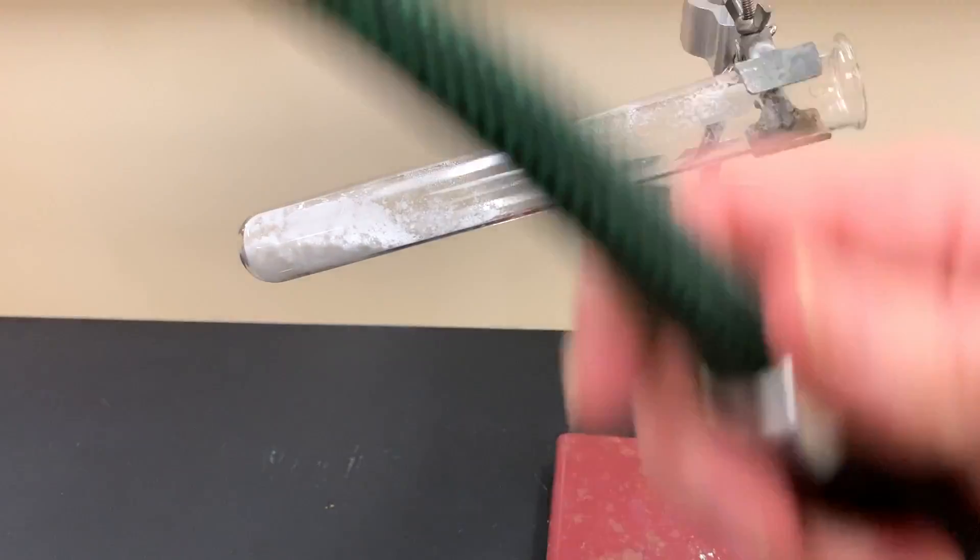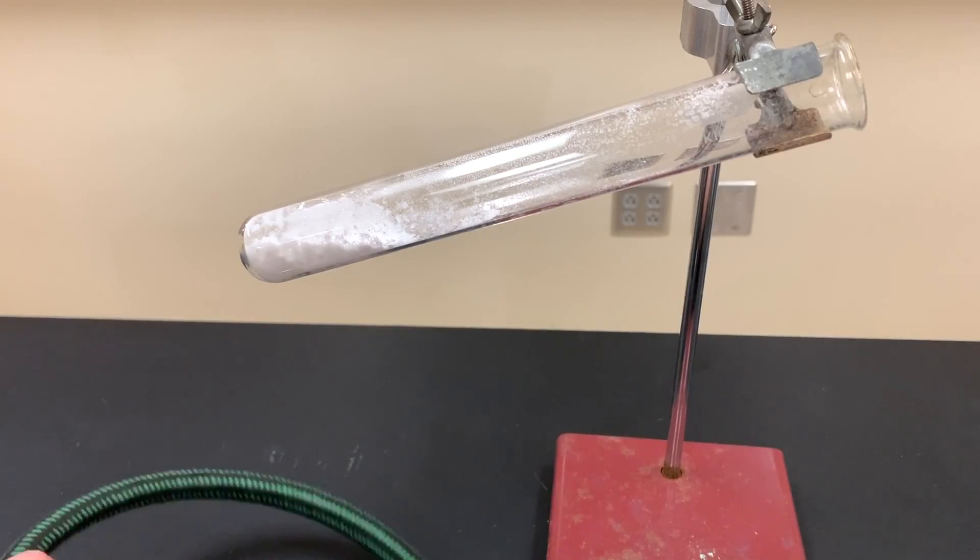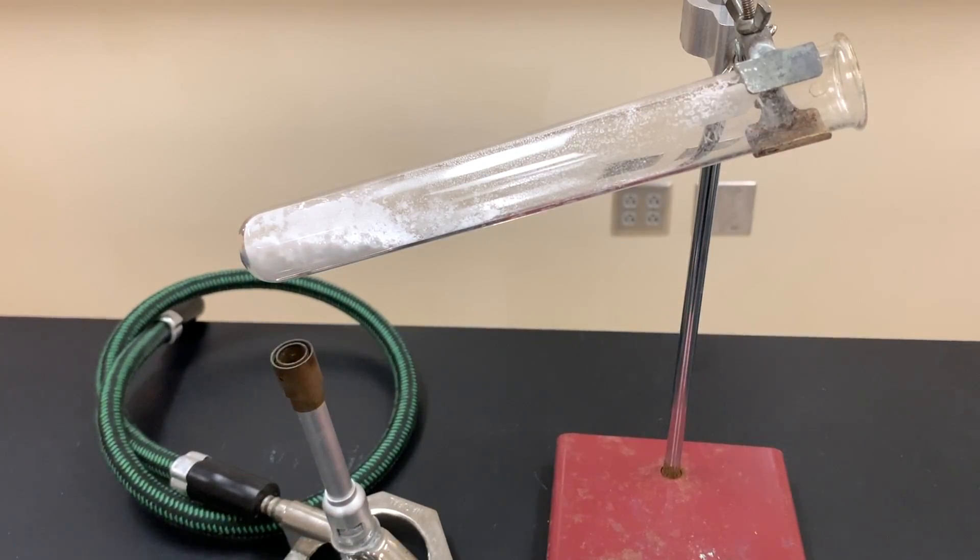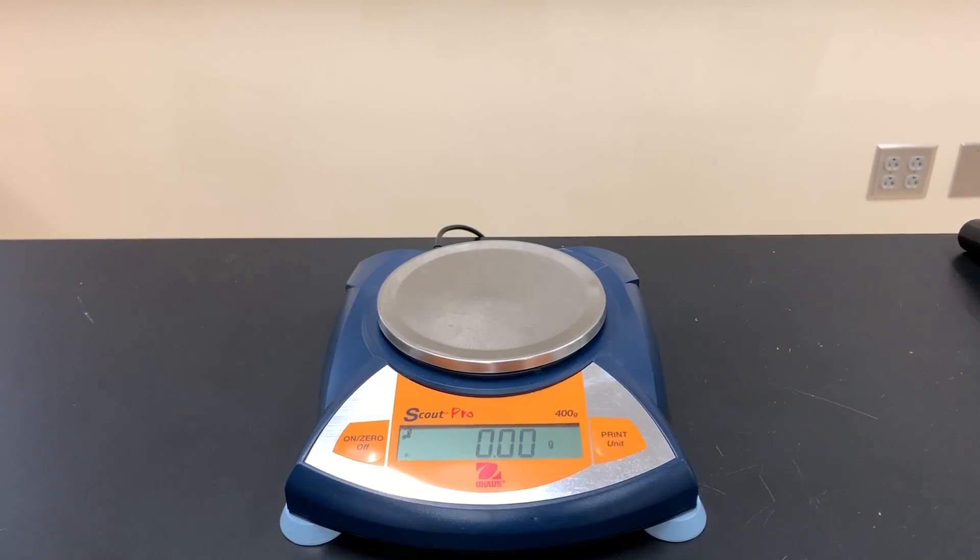And then again I have my students take the Bunsen burner and pretzel it so that I know that it is no longer having any methane coming out of it. So now it's just time to wait for this to cool and then re-weigh it.